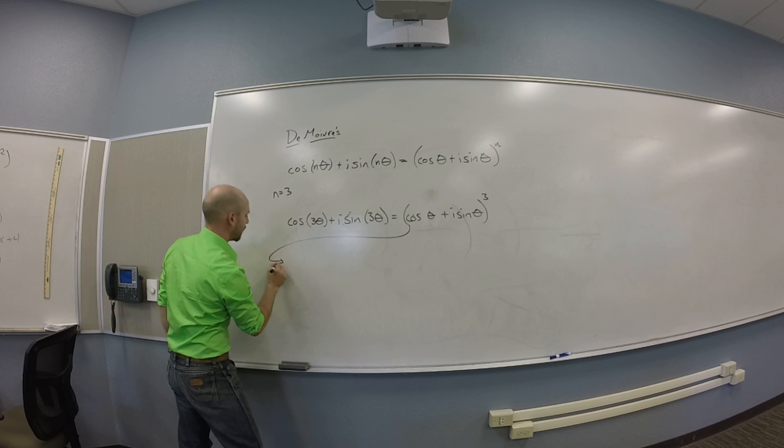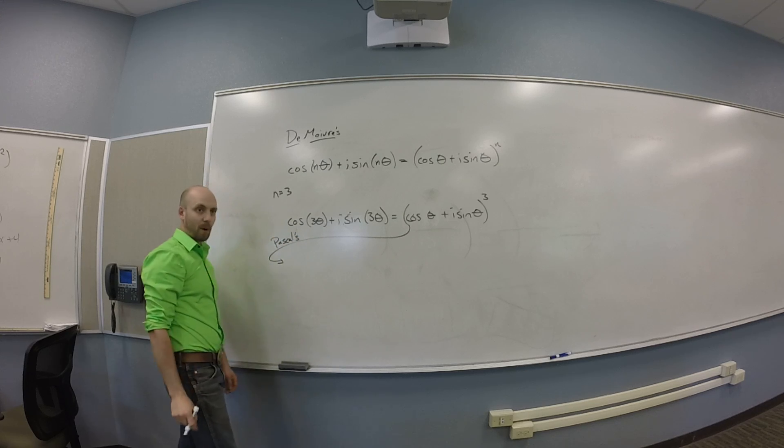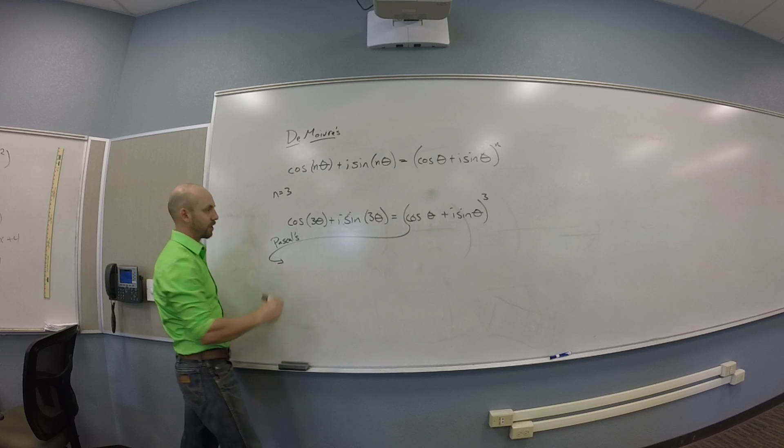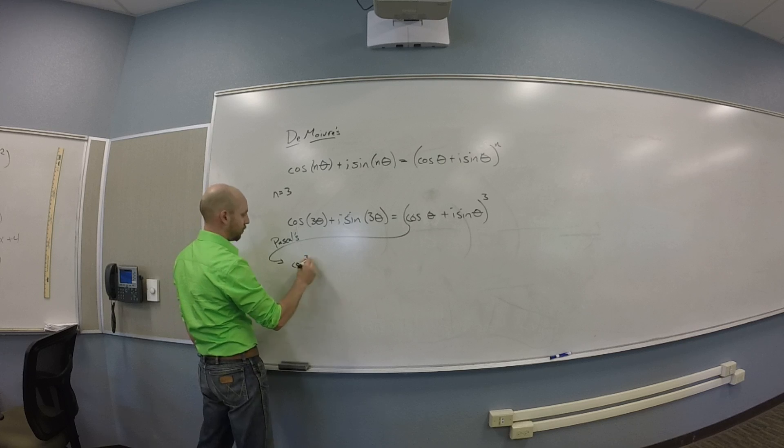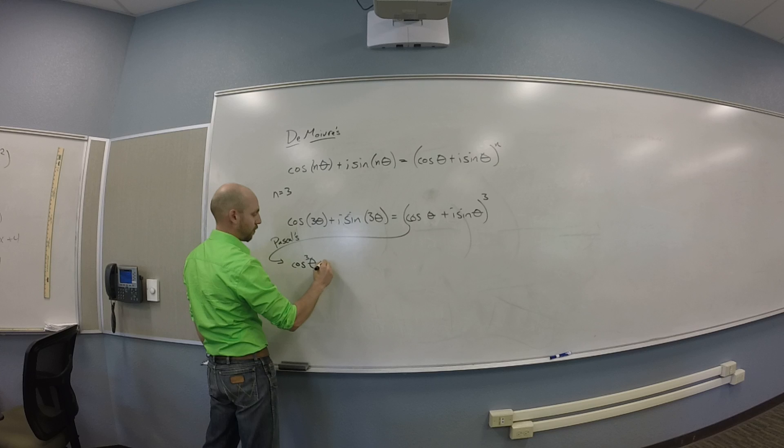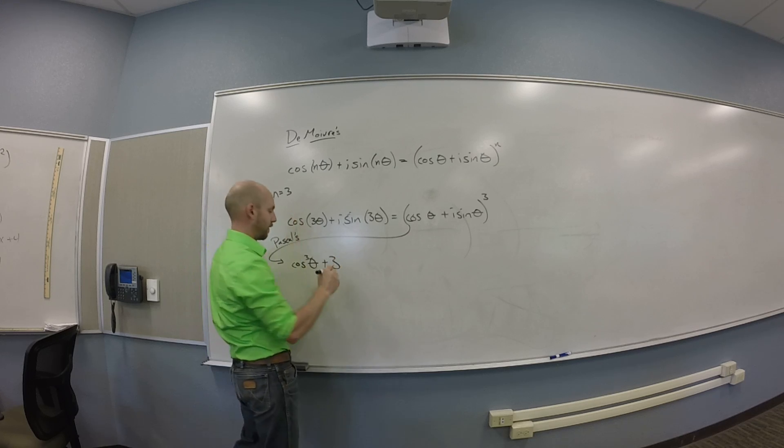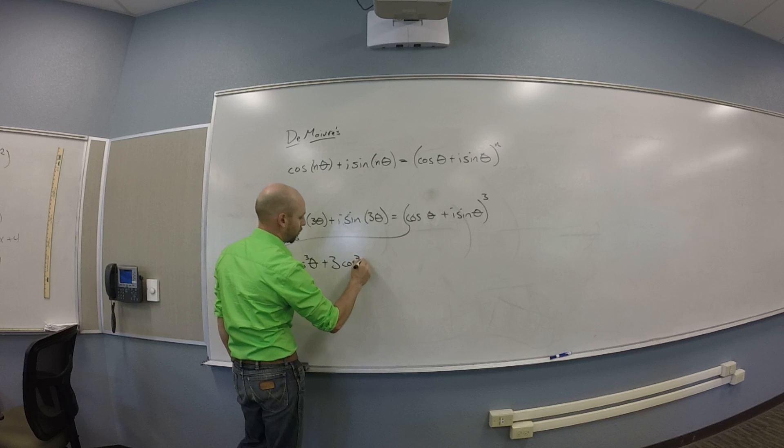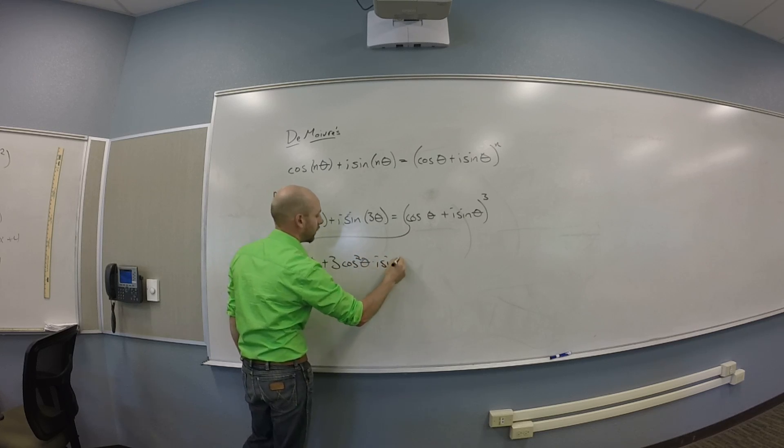So take this thing. Remember Pascal's triangle? You get cosine cubed of theta plus 3 cosine squared theta times i sine theta.